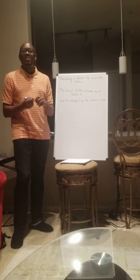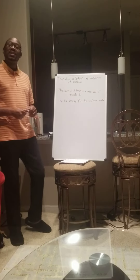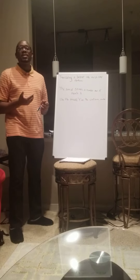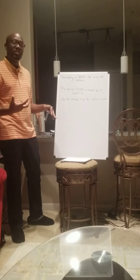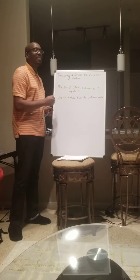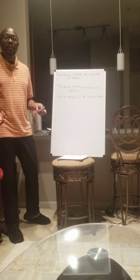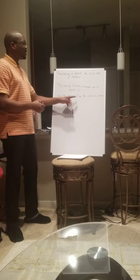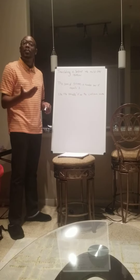Welcome back to another session with Mr. T. In today's lesson, the concept we're going to be talking about is translating a sentence into a multi-step equation. Our sentence today is going to be: the sum of five times a number and 15 equals three. We're going to use the variable T as the unknown number.